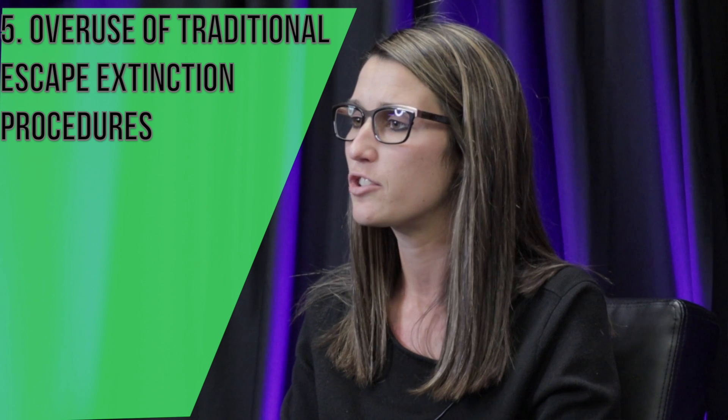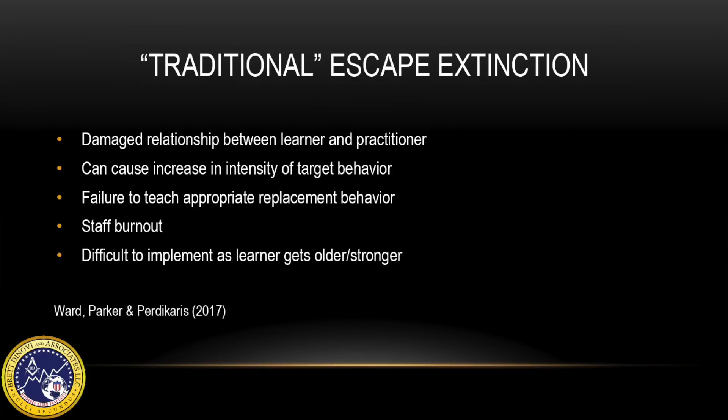Five: overuse of traditional escape extinction procedures. Traditional escape extinction is described as the use of repeated verbal prompts, often referred to as nagging, and/or forced physical prompts to get the learner to comply with the staff directive. Both nagging and forced physical prompts can lead to a multitude of harmful side effects. These side effects include, but are not limited to, a damaged relationship between the learner and the practitioner implementing the traditional escape extinction procedure, an increase in behavior intensity, reduced fight-or-flight responding in the learner, and an increased rate of staff burnout.